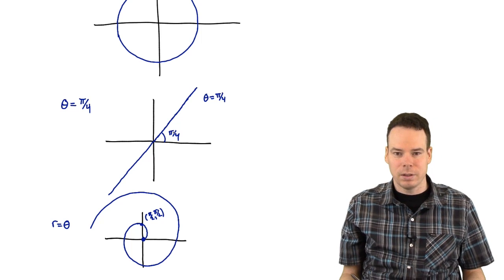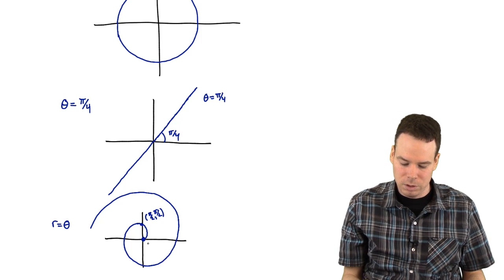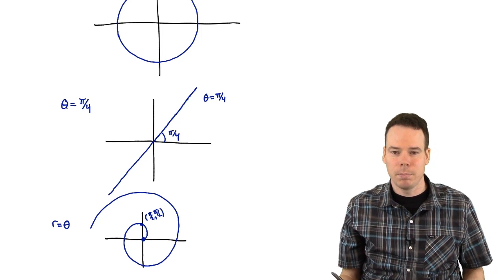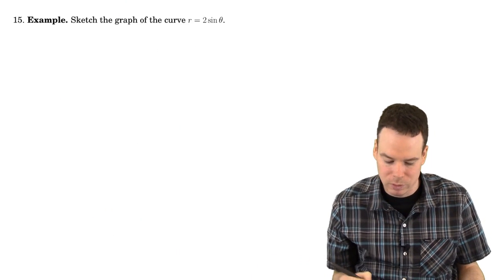So basic objects are circles, lines, spirals, things that are circling around the origin. But we also get these straight lines through the origin as well, based on theta being constant. So let's now look at a few more examples of curve sketching.